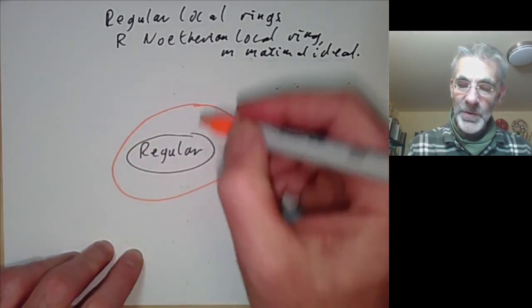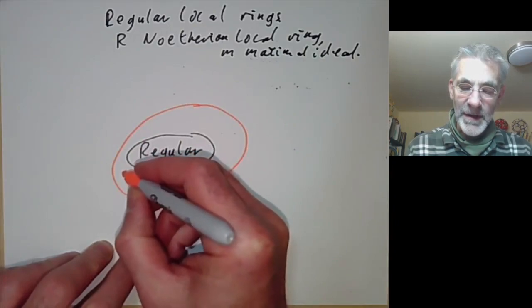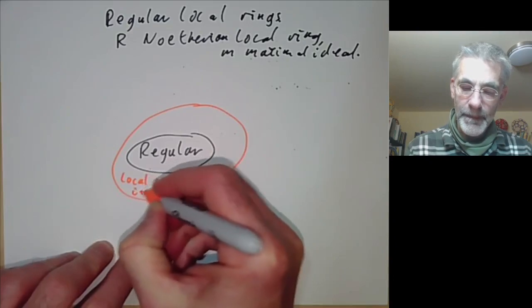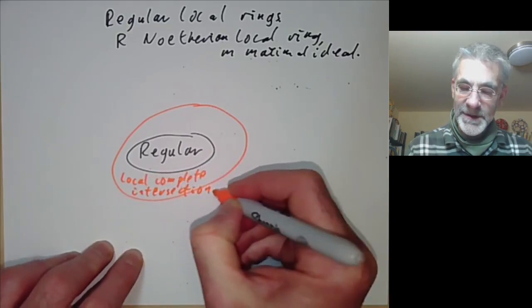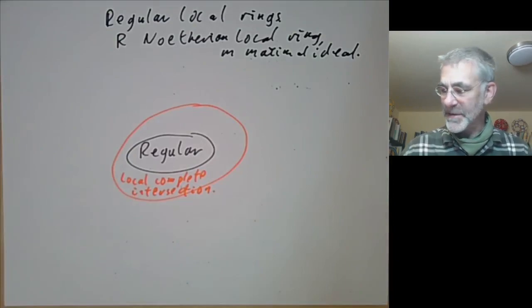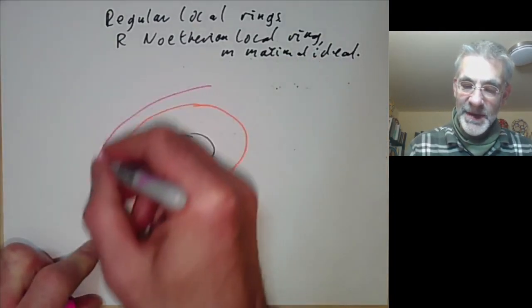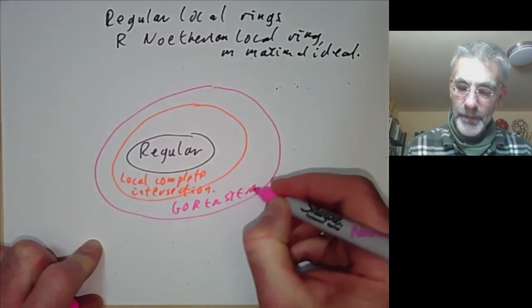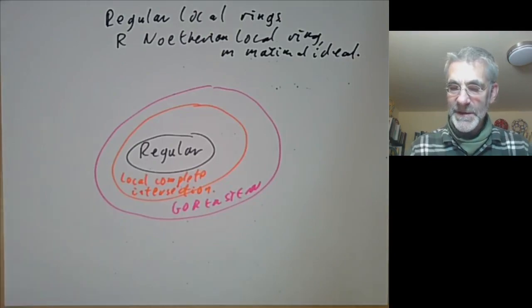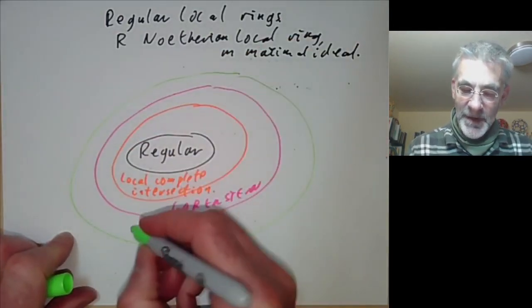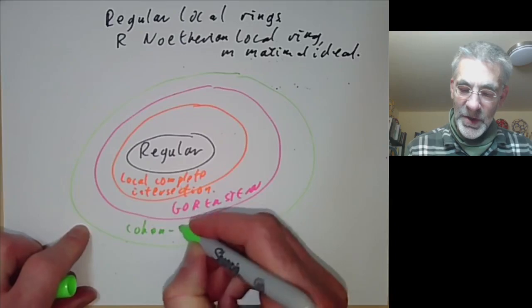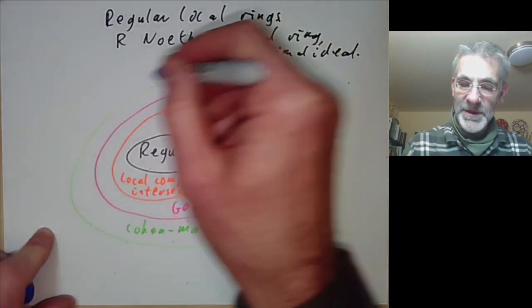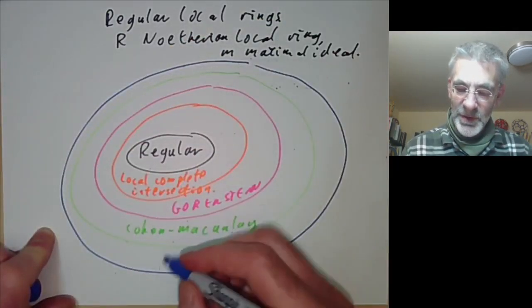A slightly more general class of local rings are local complete intersections. Local complete intersection rings are themselves a special case of Gorenstein rings. Gorenstein rings are a special case of Cohen-Macaulay rings. And Cohen-Macaulay rings are a special case of general local rings.